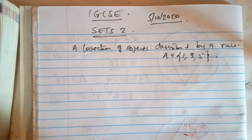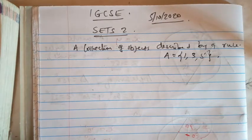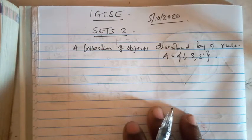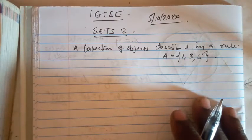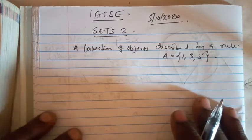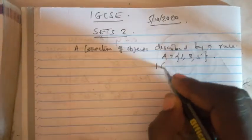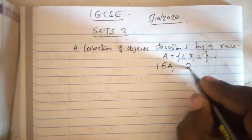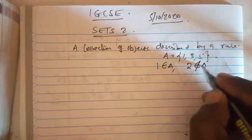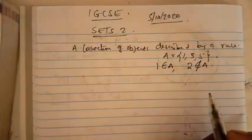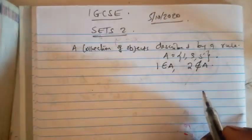Each object is an element or a member of the set. For example, using set A, you would say: 1 is a member of A, and 2 is not a member of A. Please note the difference.